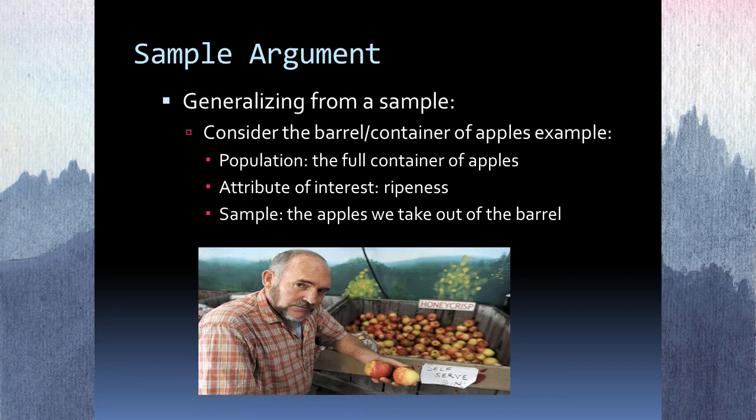Let's look at a sample argument using the barrel of apples as reference. On the face of it, it's simple: you're trying to figure out what something is like based on a smaller part of it. It's like a pie on the table — how do you know if the whole pie is good? You try a piece. If you had a good piece of apple pie, you know the rest is good because you've had a sample. You clearly don't have to eat the entire pie to know if it's good.